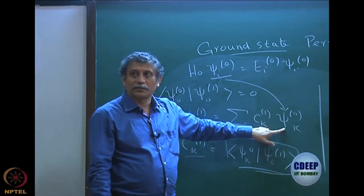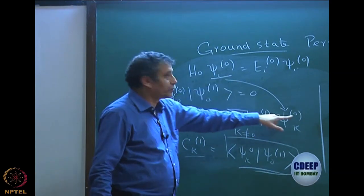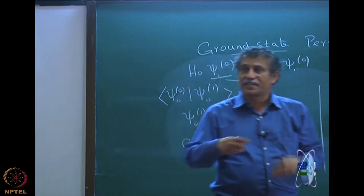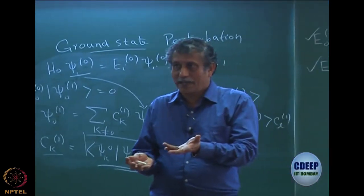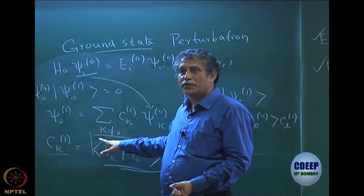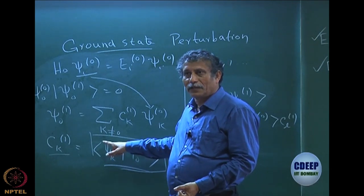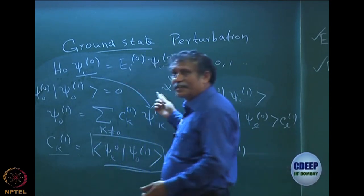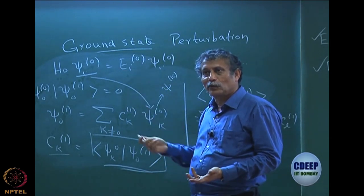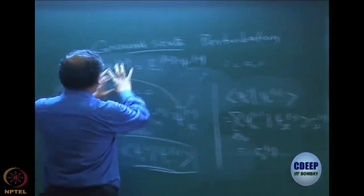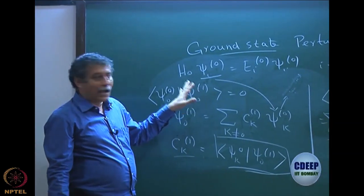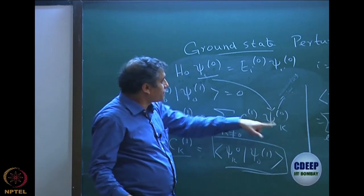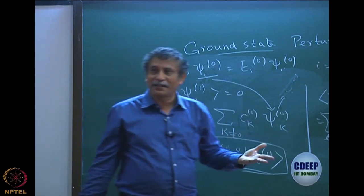k will be all states of H0 except k equal to zero. These are the eigenstates of H0: all eigenstates of H0 have superscript 0 and subscript k. k equal to zero means it is the ground state of H0. So I am using all states of H0 except the ground state of H0. What is available to me are all eigenstates of H0, written in this manner.